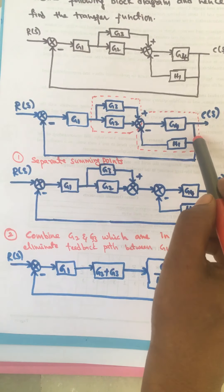As discussed, the combined cascade block is G1·(G2 plus G3)·G4 divided by 1 plus G4·H1. Now to simplify this using the feedback formula: the forward path gain is G1·(G2 plus G3)·G4 divided by 1 plus G4·H1, and since we have a minus sign, the denominator is 1 plus forward path gain multiplied by the feedback gain. The feedback gain here is 1, so we multiply by 1.